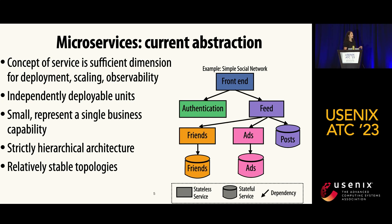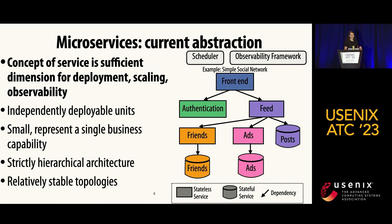All of these services are connected via dependencies — a dependency is just when one service communicates with another. One important assumption is the notion that a service is a unit sufficient and fine-grained enough to schedule, scale, route to, and observe different entities.